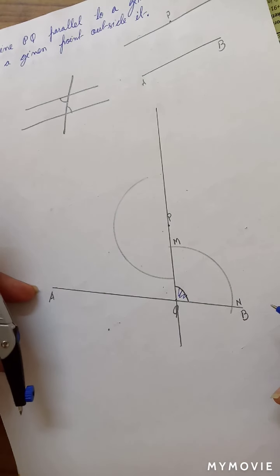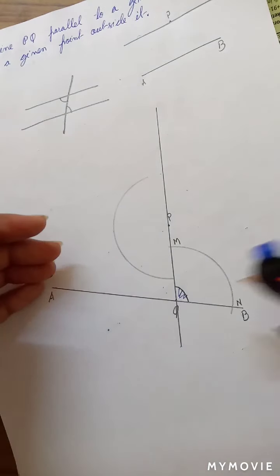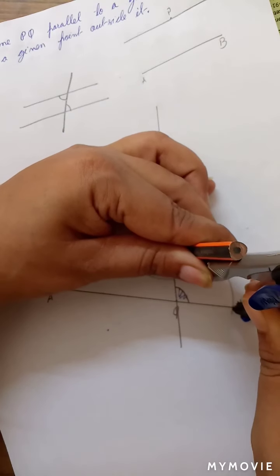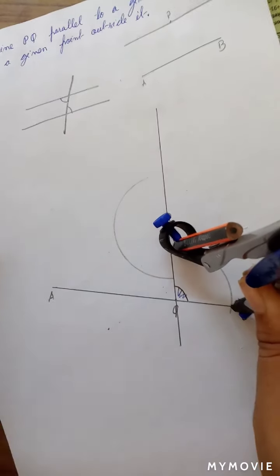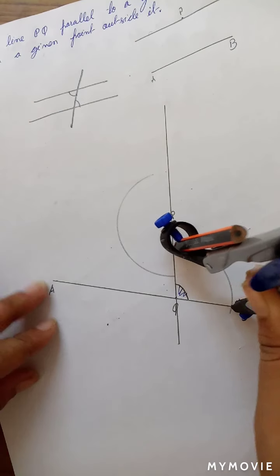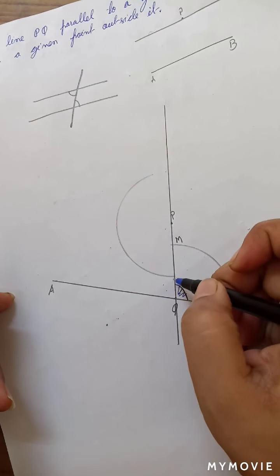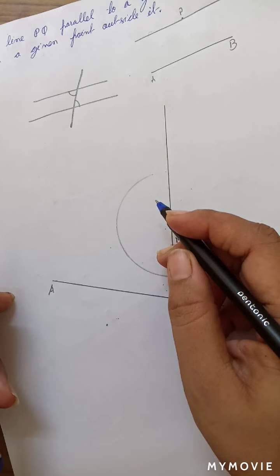Because we want to draw a similar angle on the opposite side—I'm sorry, not similar angle, but the same angle. Now, let's take the measurement of this angle. And with P as center, we drew an arc. Let's call this point as X.